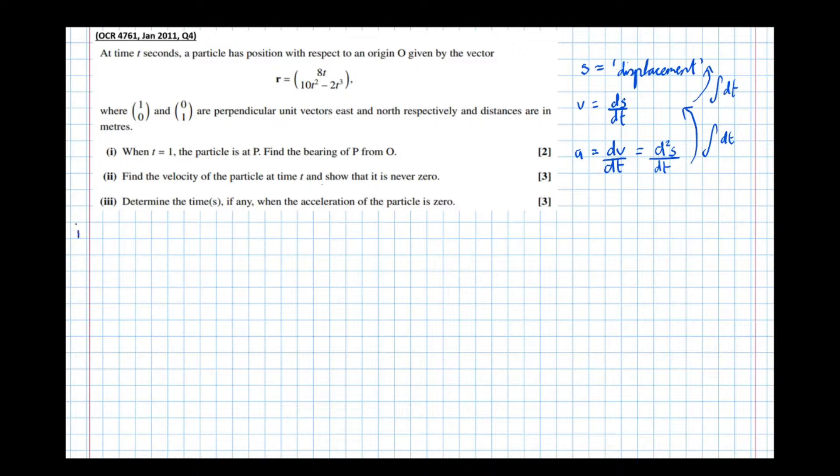Part one: At time t seconds, a particle has position with respect to origin O given by the vector r = (8t, 10t² - 2t³), where i and j are perpendicular unit vectors east and north respectively, distances in meters. When t equals 1, the particle is at P. Find the bearing of P from O.